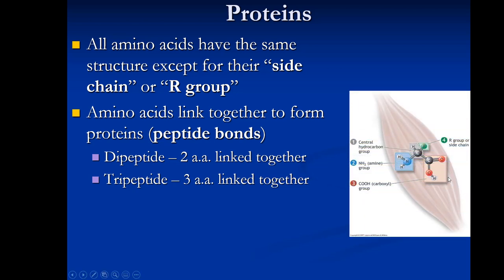The structure of an amino acid has a central carbon. Coming off one side is a carboxyl group (carbon and oxygen), on another side a hydrogen, and then the amino group which is the nitrogen-containing group. The fourth component coming off the central carbon is what makes each amino acid unique — that's known as its R group or side chain.